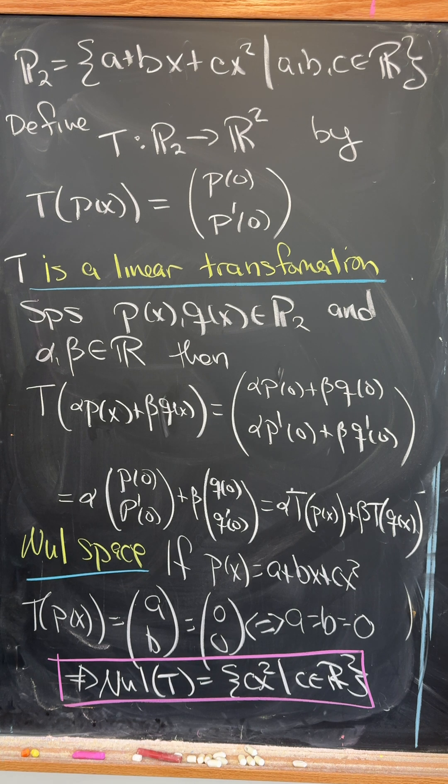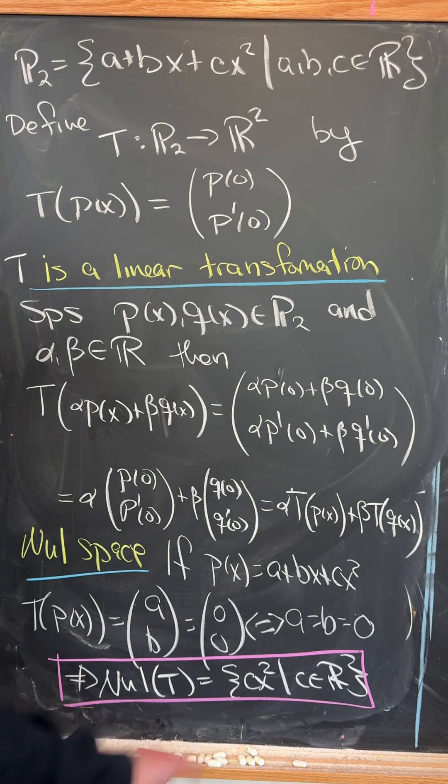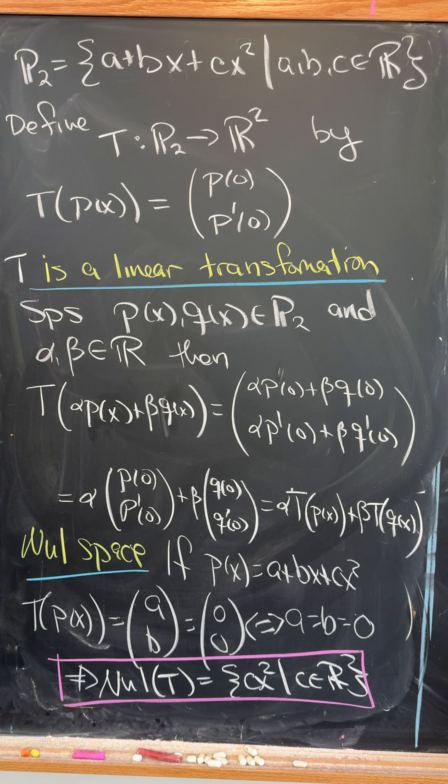So this is equal to the 0 vector if and only if a and b are both 0, making the null space of this simply the multiples of x squared.